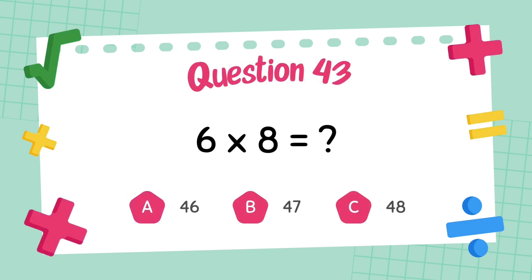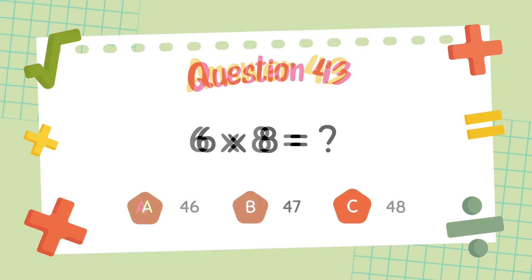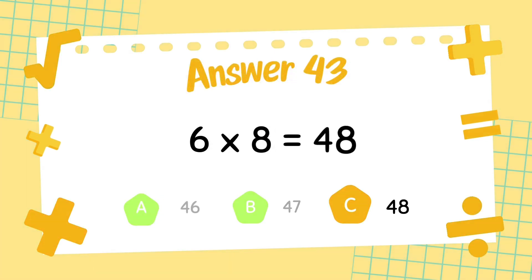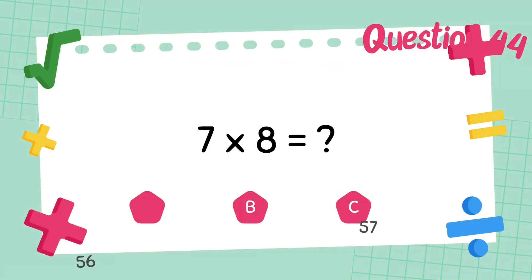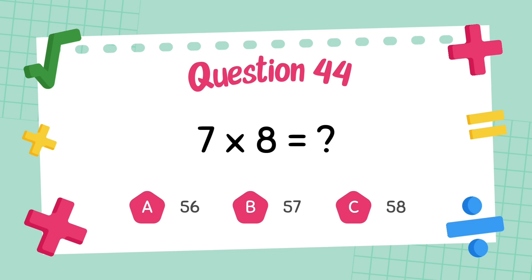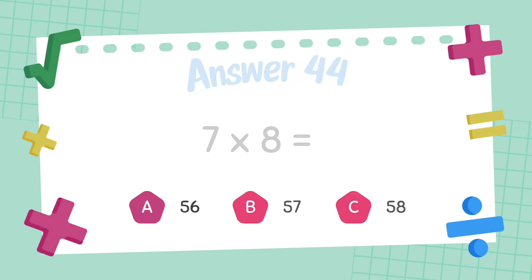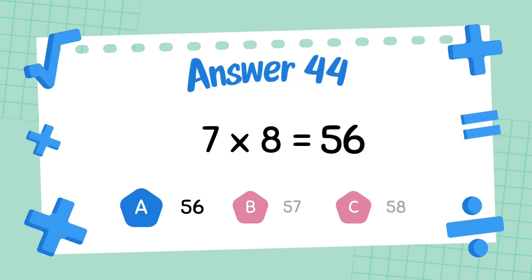What is 6 multiply 8? The answer is 48. What is 7 multiply 8? The answer is 56.